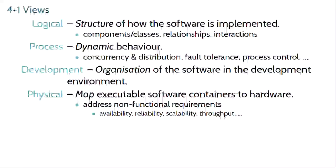The physical view is literally the physical architecture — what do we need to worry about in terms of actually executing the system? It looks at what hardware infrastructure is required and what software is going to run on which bits of hardware. The focus here is on delivering your non-functional requirements — things like availability, reliability, scalability, throughput, and anything else related to what happens if parts of your system fall over or get overloaded.